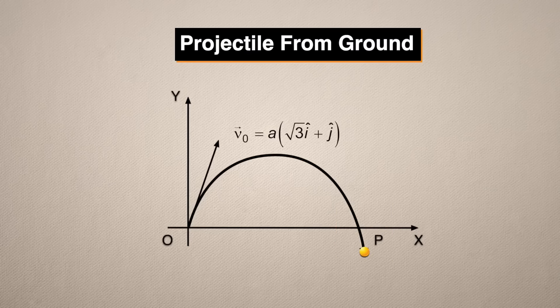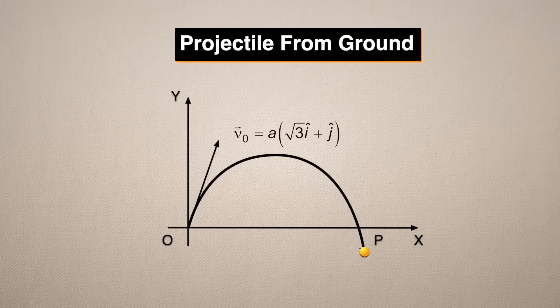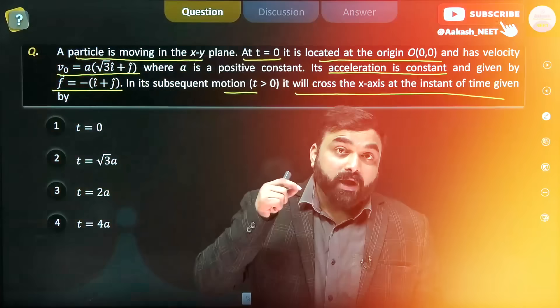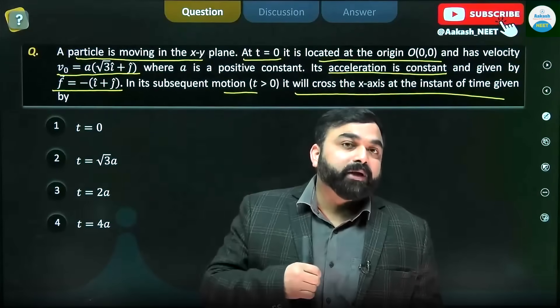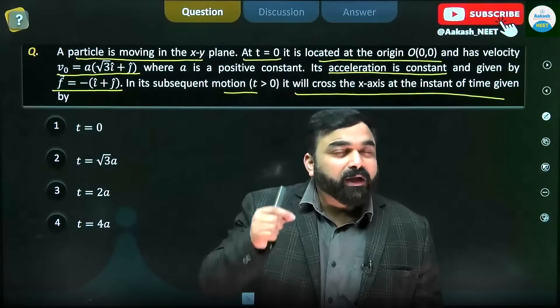When you read the question, this particular thing should come in your mind: when the particle will be crossing the x-axis, at that time what would be the coordinate of the particle? When the particle is on the x-axis...